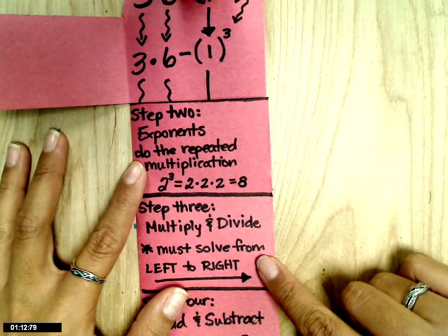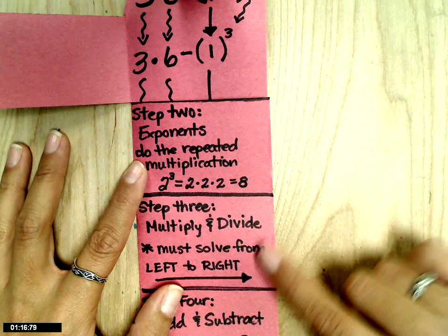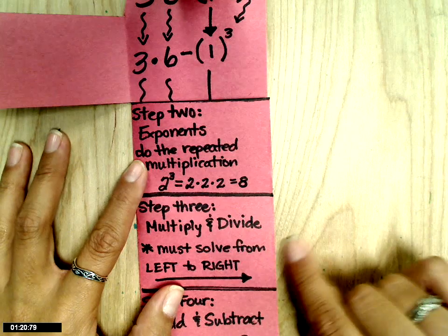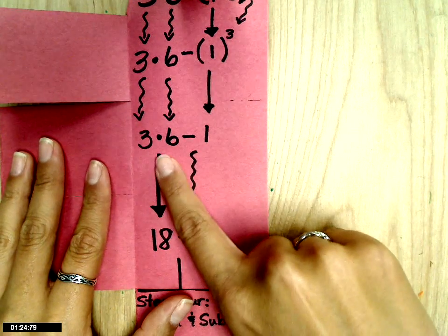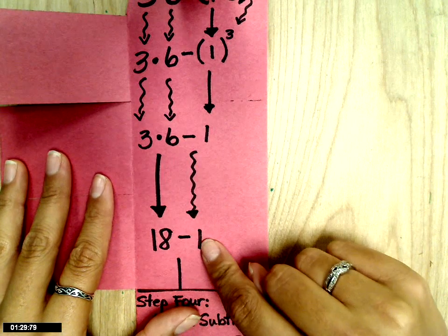Step 3 is multiply and divide. The important part is that you have to remember it's from left to right. If you have division first on your left, you divide first. In this case, all we have is multiplication, so we do 3 times 6, which is 18, and bring down the minus 1.